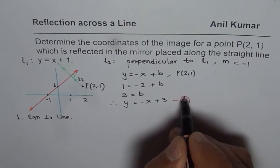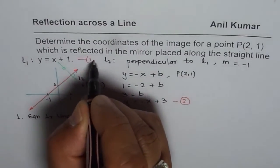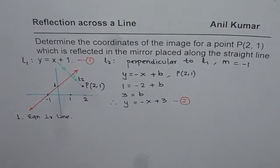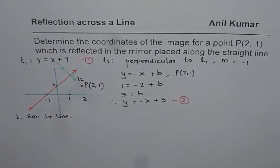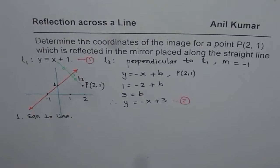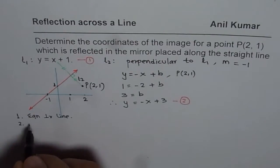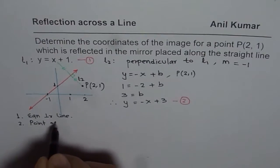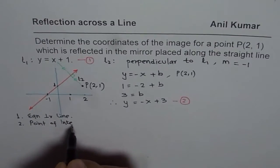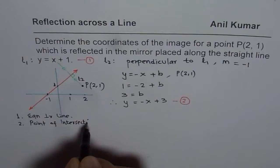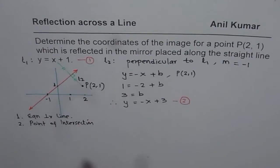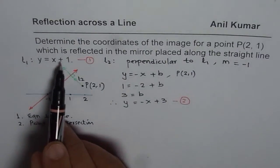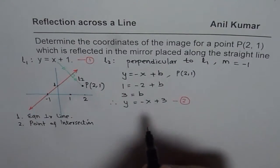So this is the second line and that is our first line. We have found the equation of the second line. Now we need to find the point of intersection by solving these two equations simultaneously: y equals x plus 1, and y equals minus x plus 3.